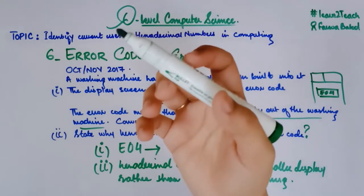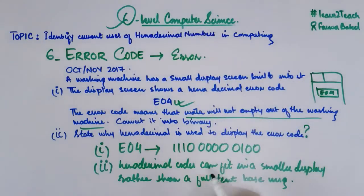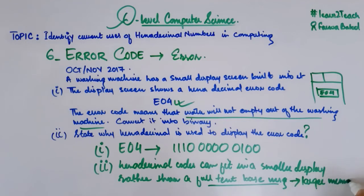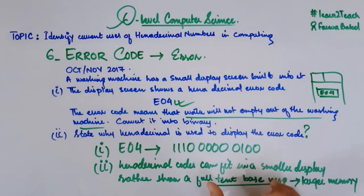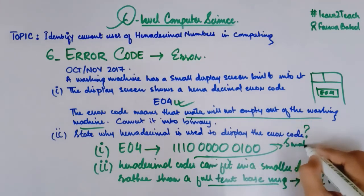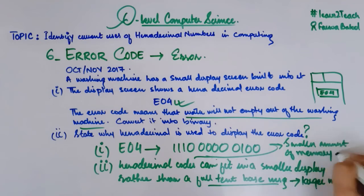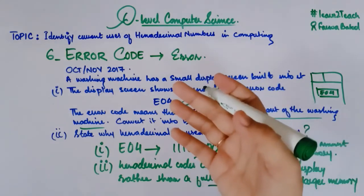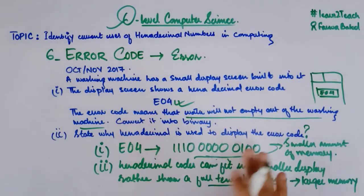The second reason is that a smaller amount of memory is needed to store hexadecimal error codes compared to a full text-based message. If you have a full text-based message, you need larger memory to store it. With a hexadecimal code, only a smaller memory size is required to store the hex error message.